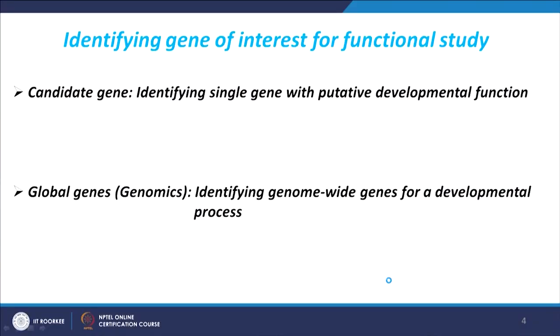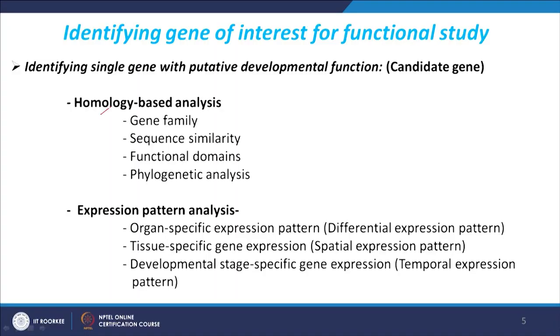We can take two approaches: one is called the candidate gene approach, where you identify a single gene with putative developmental functions. The second approach is more global — genomics — where you identify a group of genes specifically present in a particular developmental process. The criteria we look for when selecting genes that might have a function in developmental processes include two important parameters.